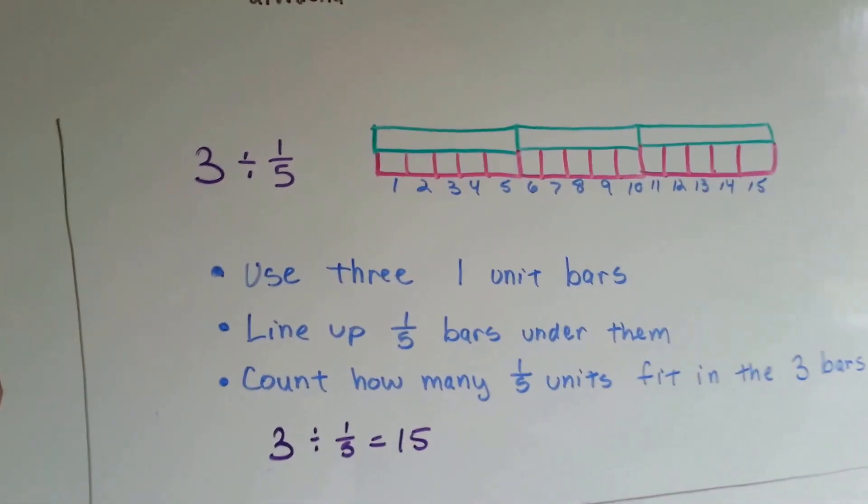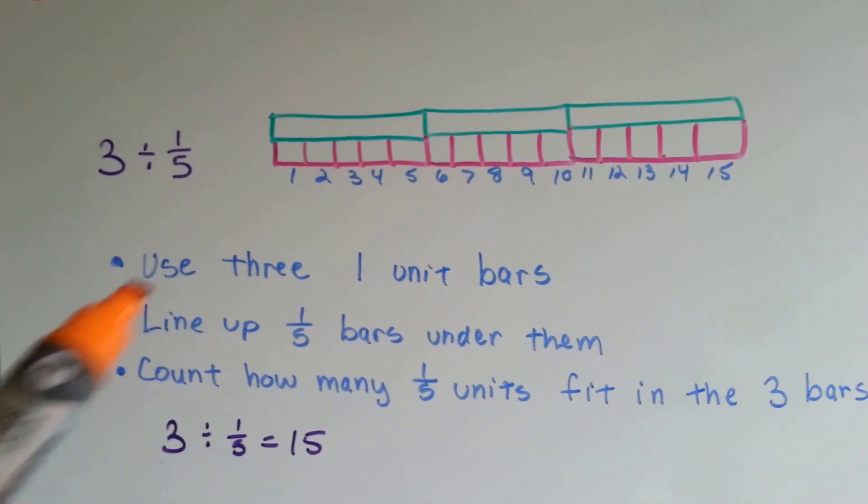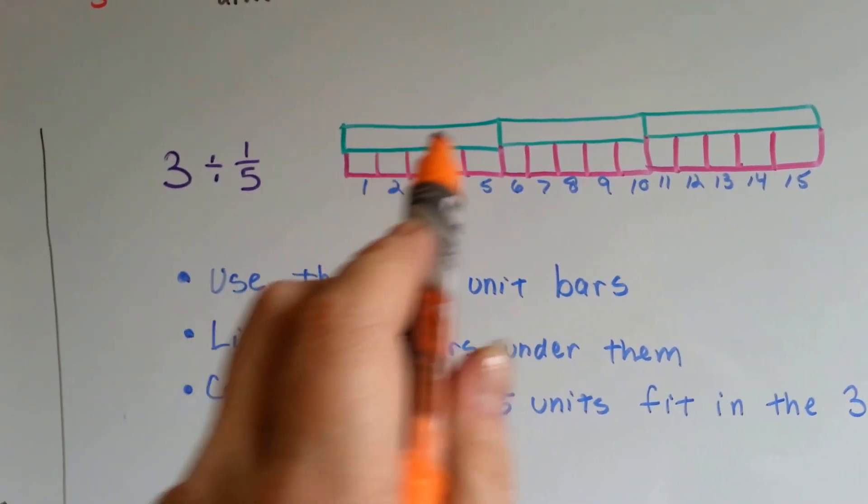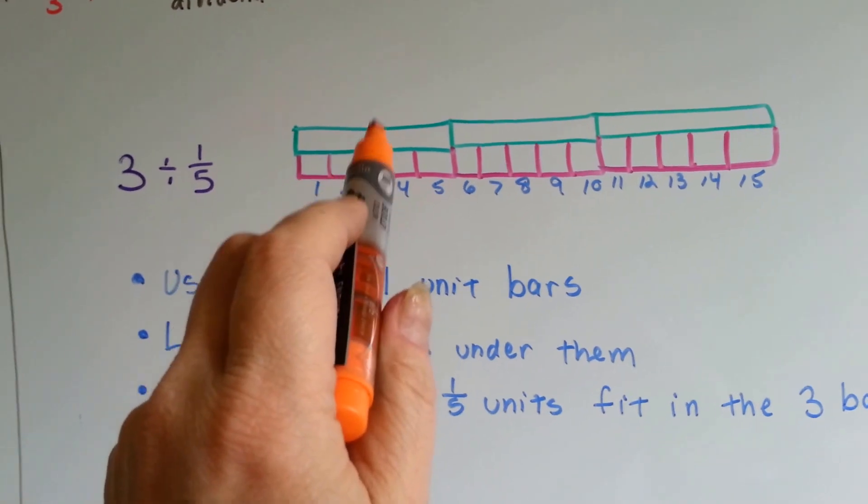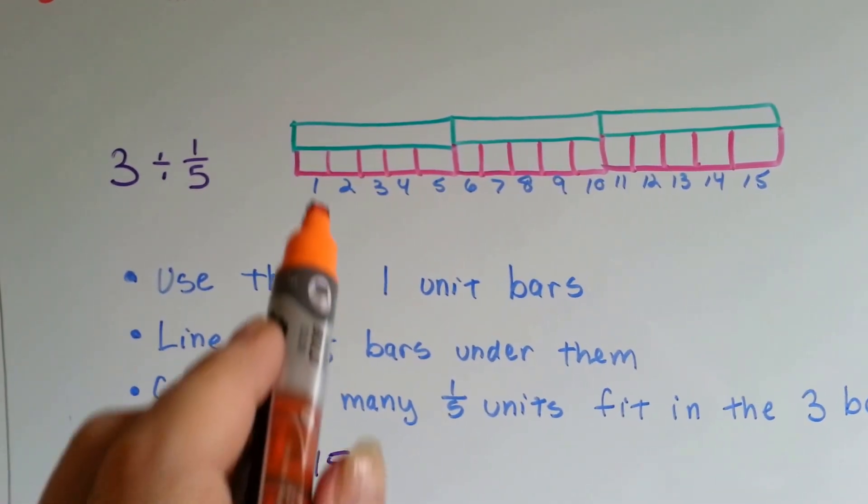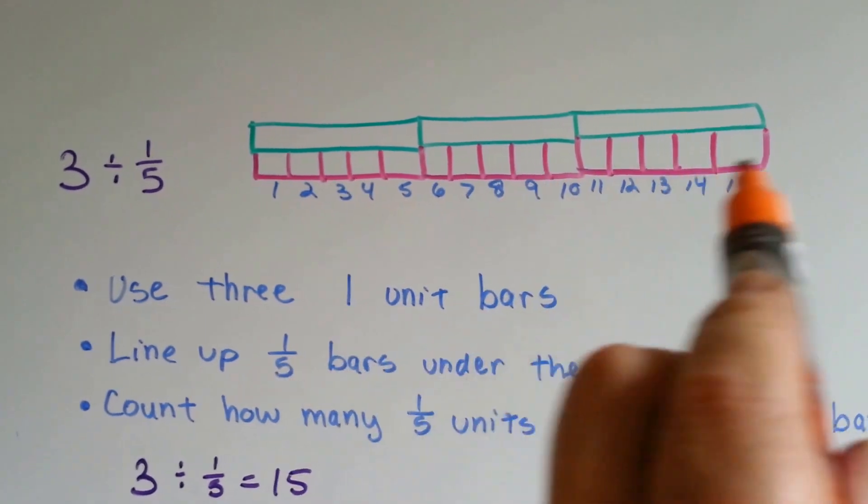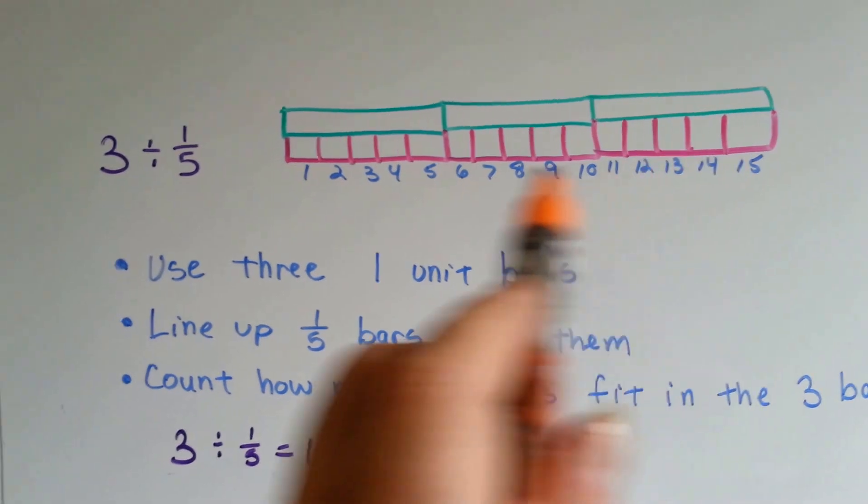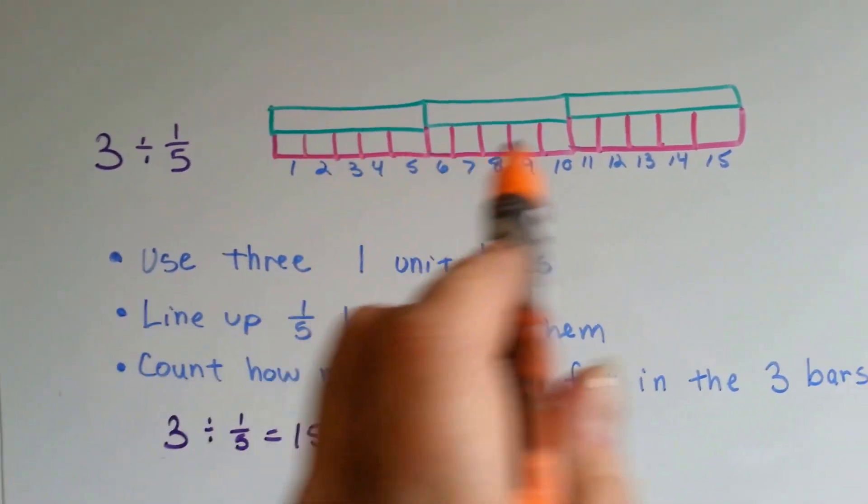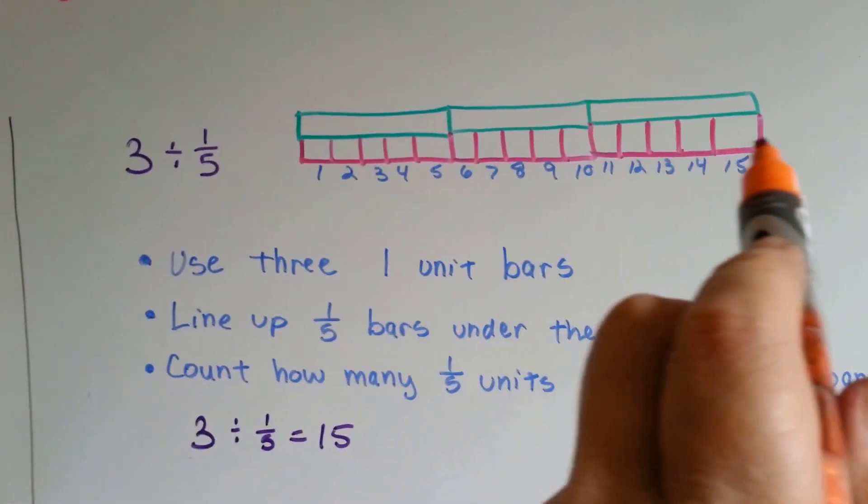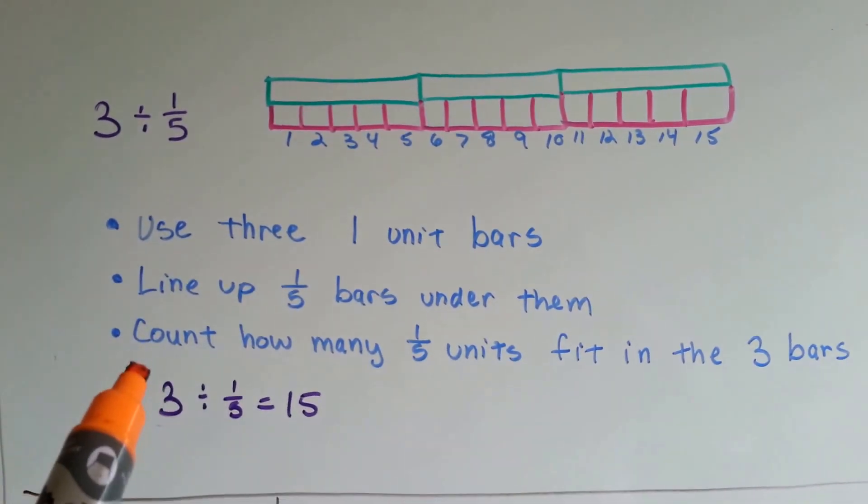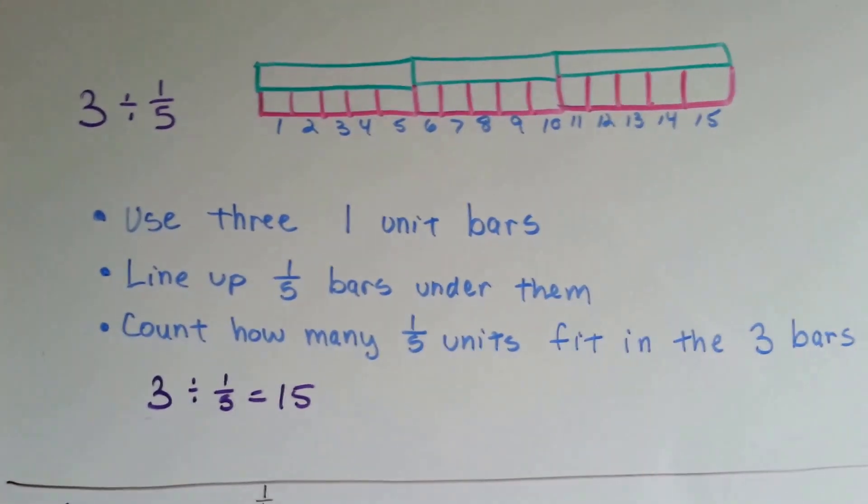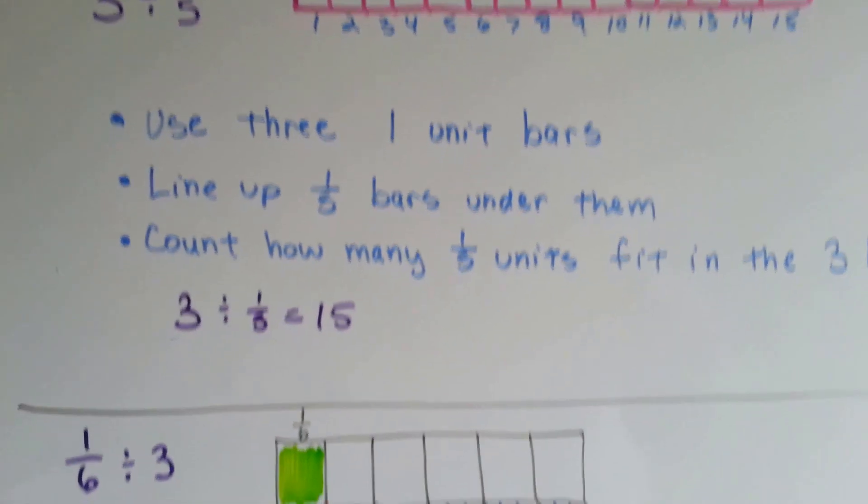When we have 3 divided by 1/5, we can use bar models. We make 3 whole ones, the green ones, and we line up 1/5 fraction bars underneath it that are split into 5. So the 3 full ones will total 15 of the ones split into 5s. We count how many 1/5 units fit all the way across to the 3, and we see that it's 15. So 3 divided by 1/5 is 15.